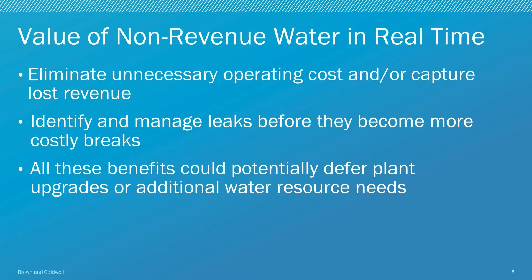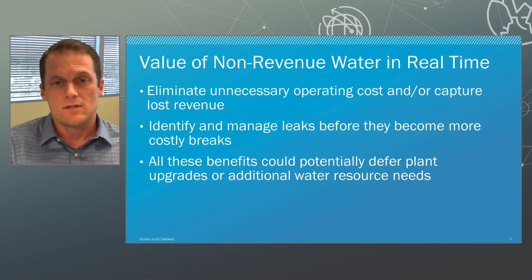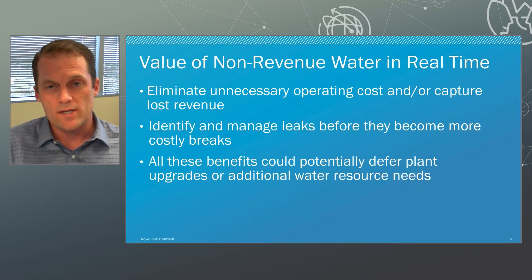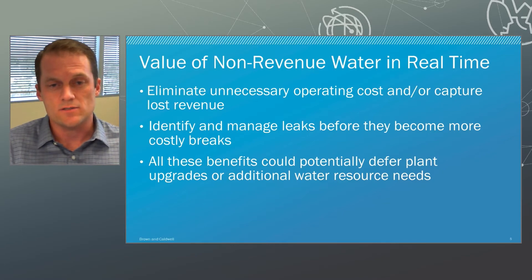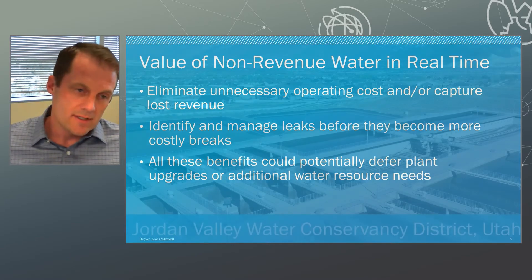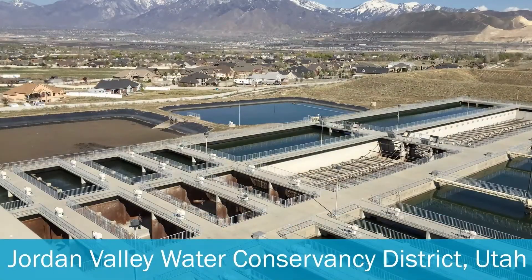We can eliminate those unnecessary operating costs and capture that lost revenue. We can also identify those leaks and address them before they become breaks, and reduce the water loss and waste throughout the system to defer those supply projects as long as possible. We recently implemented this solution at Jordan Valley Water Conservancy District.